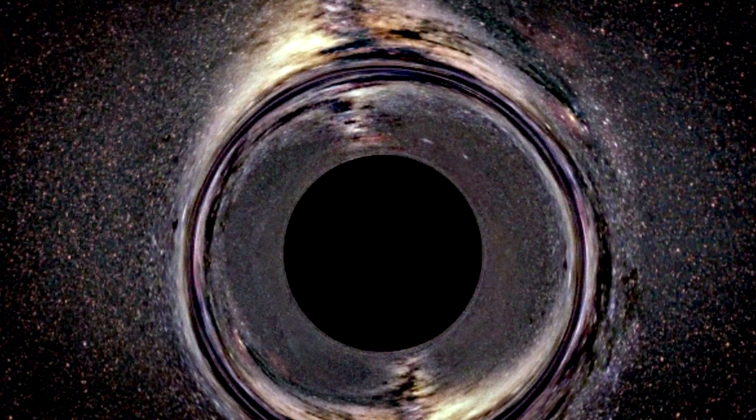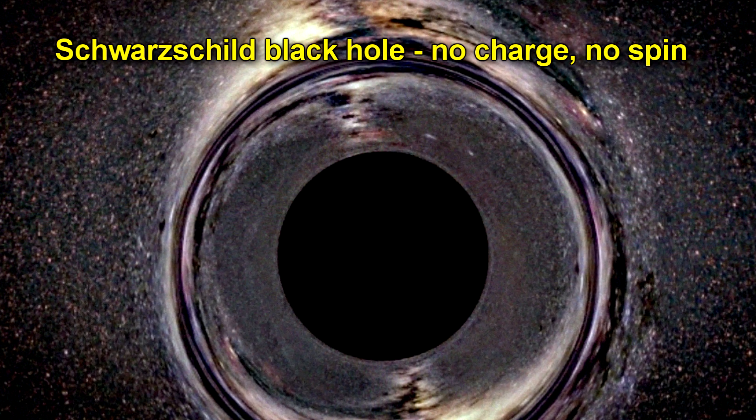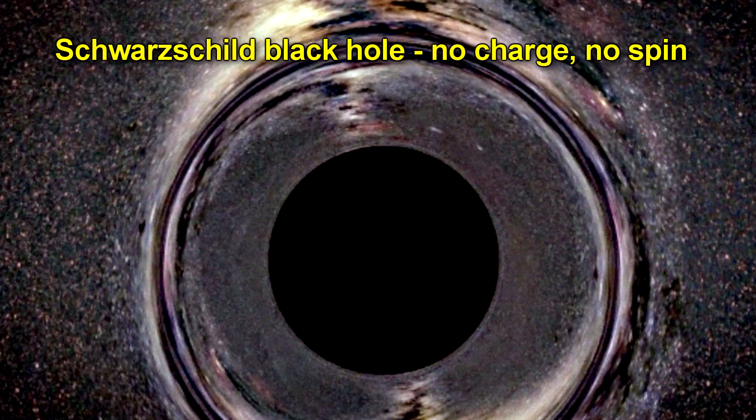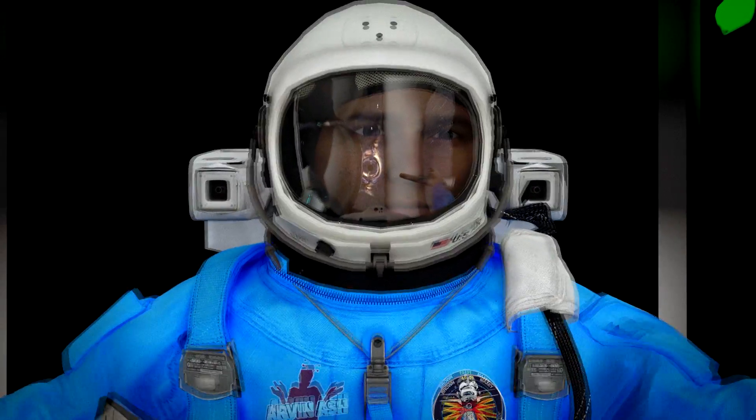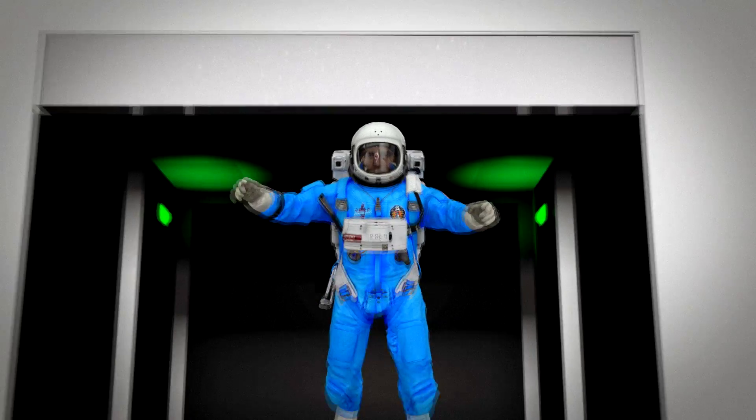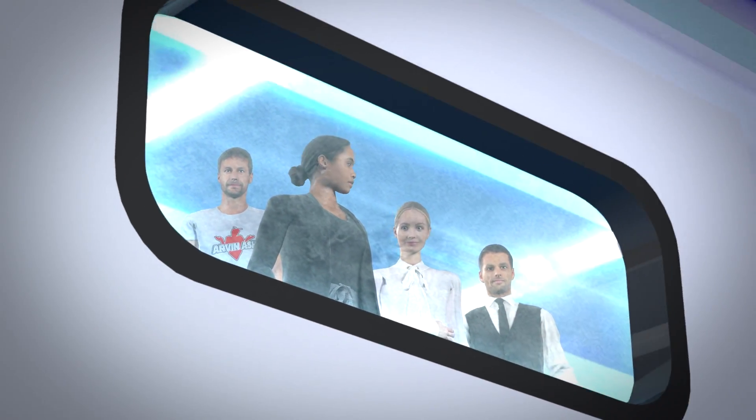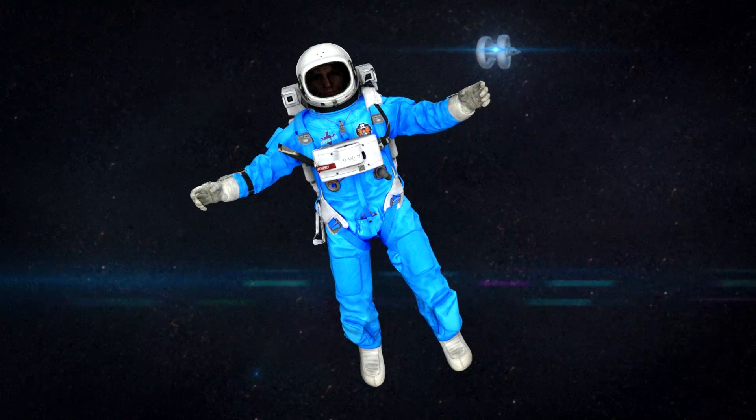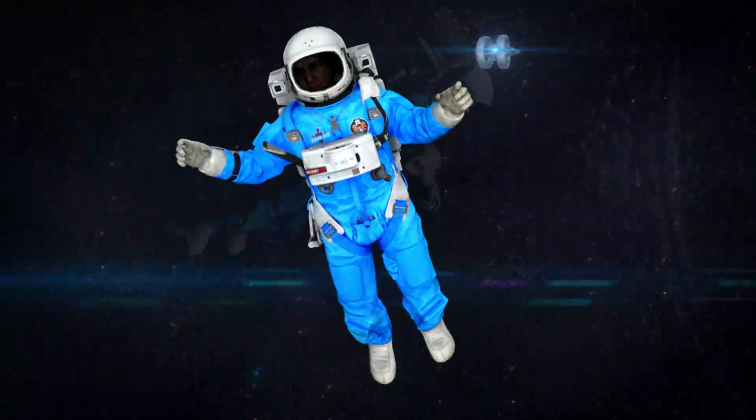For the sake of simplicity, we will presume that Sagittarius A star is a non-rotating, uncharged black hole, also called a Schwarzschild black hole. A highly curious member of our crew team, Adam, has volunteered to enter the black hole while the rest of us watch from a safe distance away. Adam's space suit, by the way, is made of a futuristic material that is super strong and immune to high energy radiation.